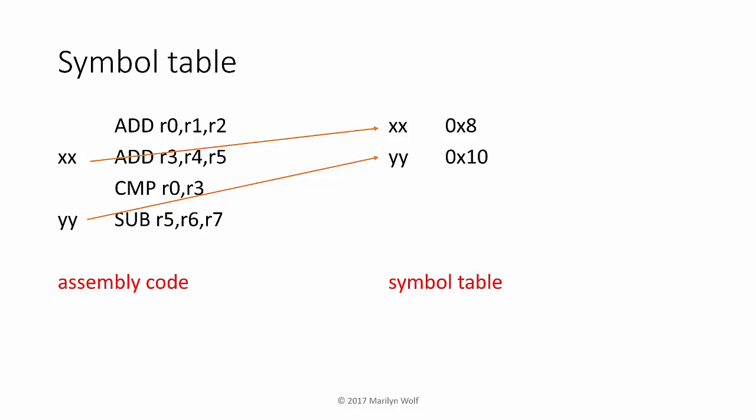In general, to use labels in an arbitrary way, we need to make two passes over the assembly code. The first pass creates the symbol table but doesn't generate any code. The second pass uses the symbol table to create the code. If we're creating debuggable code, we often want to include the symbol table so we can refer to addresses in memory using the labels from the program.